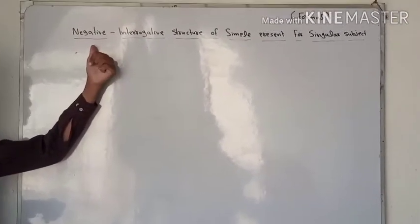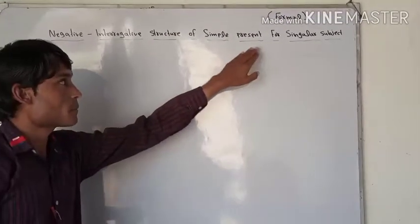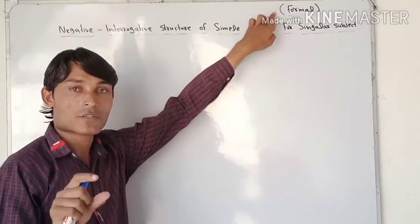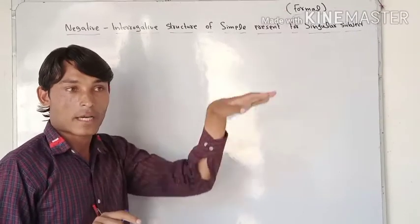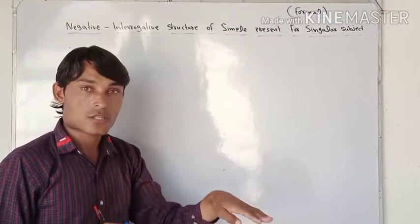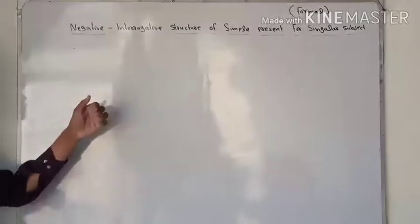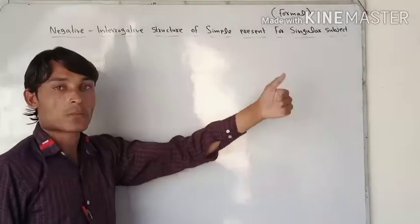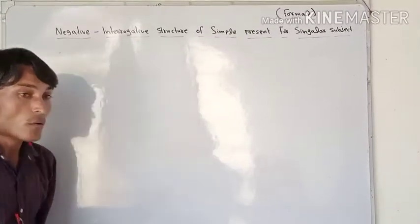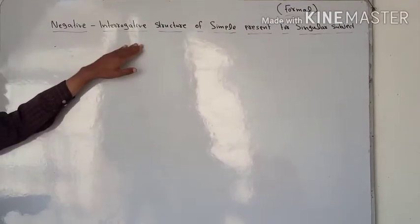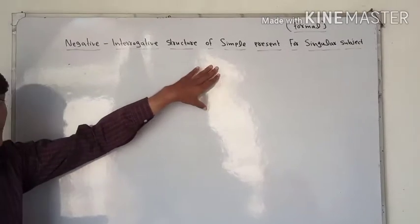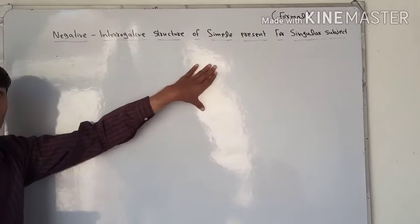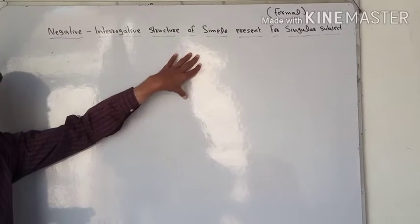In this video I would like to teach you the negative and interrogative structure of simple present tense for singular subjects. Before this video I have discussed the affirmative structure, and today I'm going to discuss negative and interrogative structure of simple present tense for singular subjects only. The plural structure I will discuss later on. For everything we need a formula, and the same applies for tenses as well.